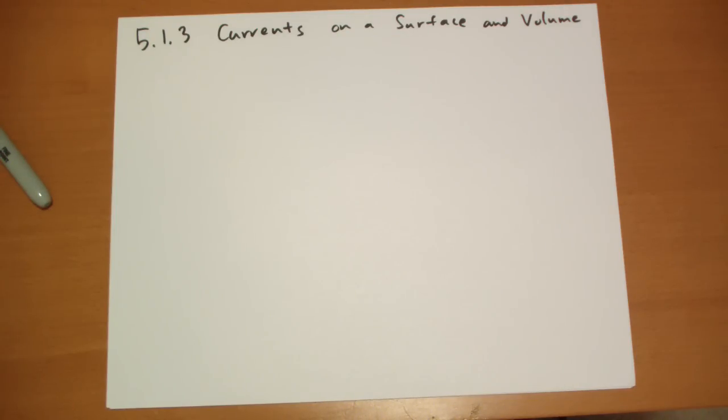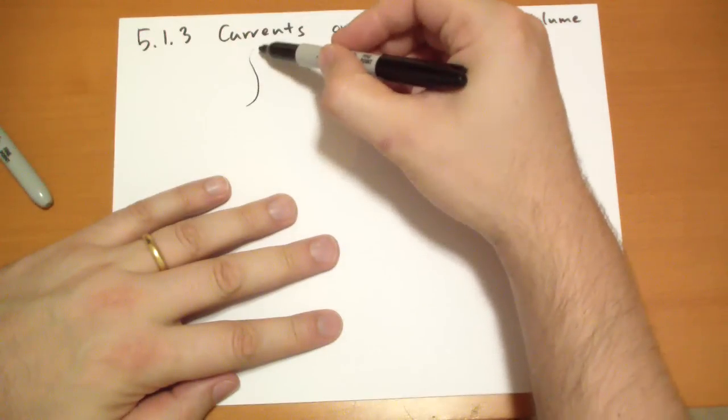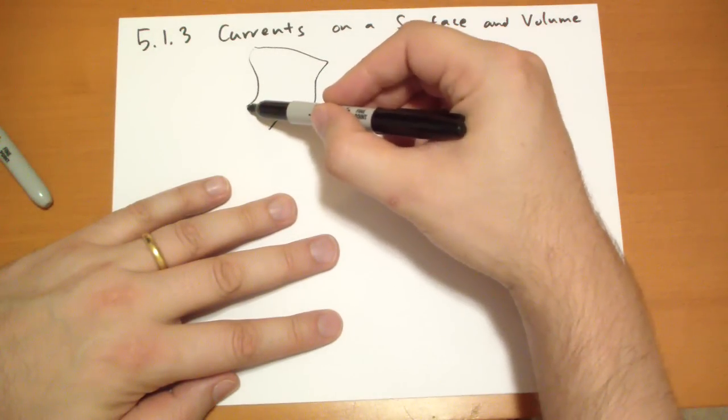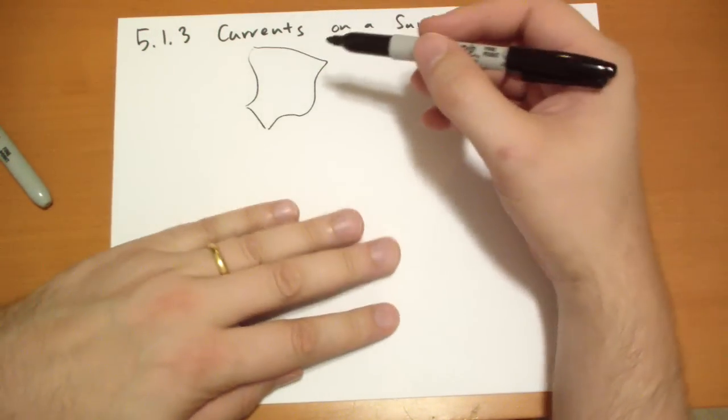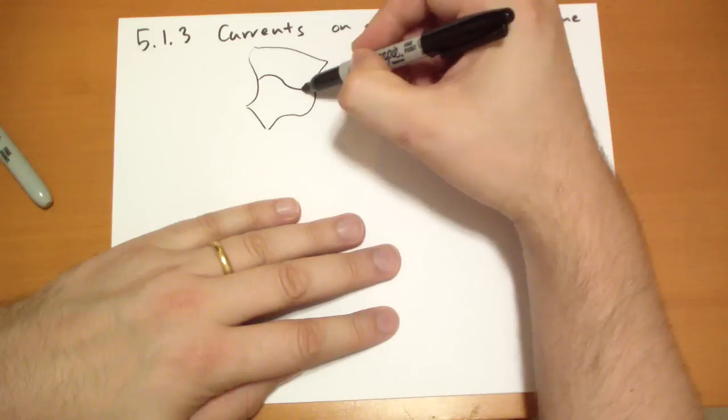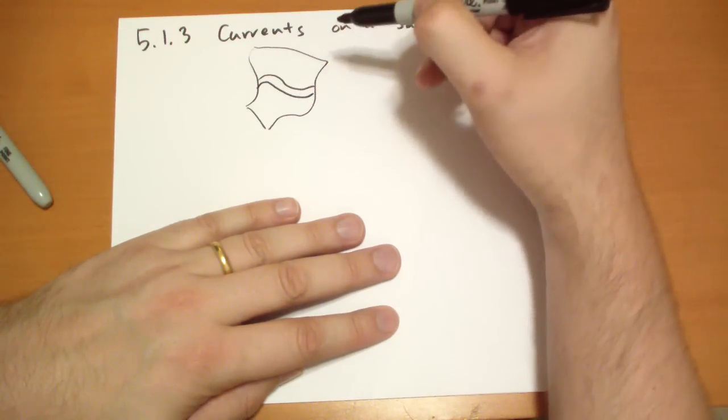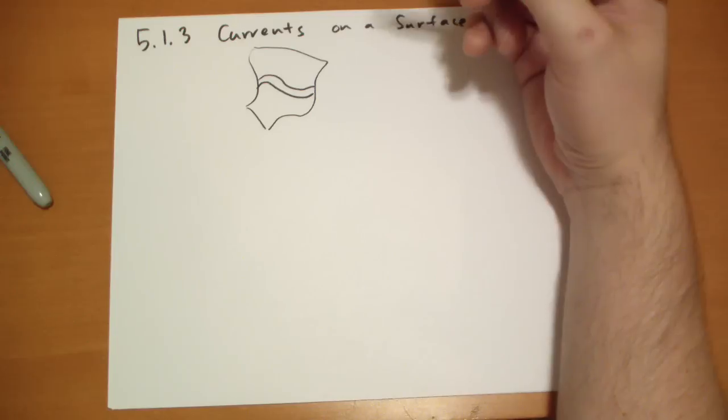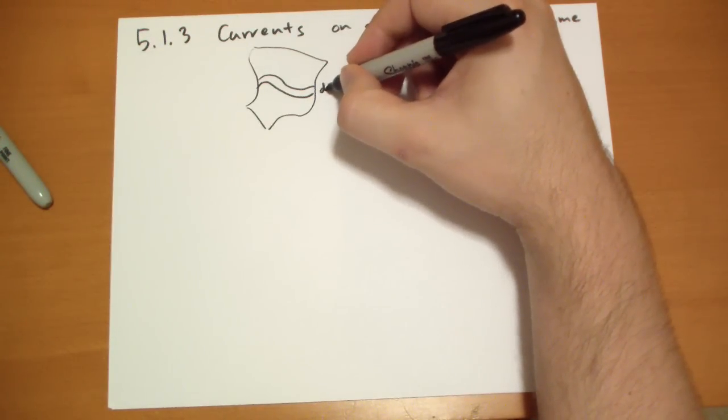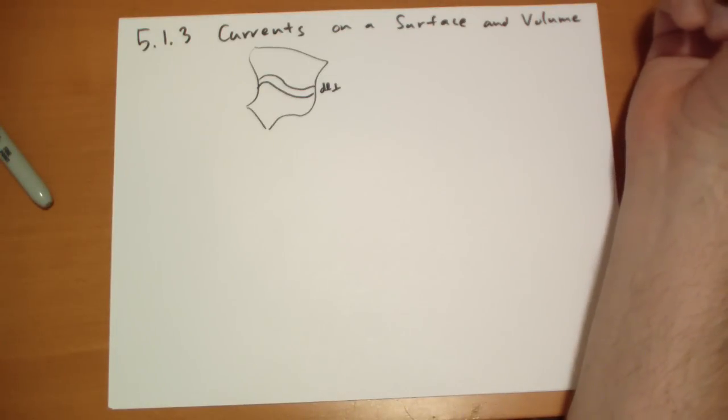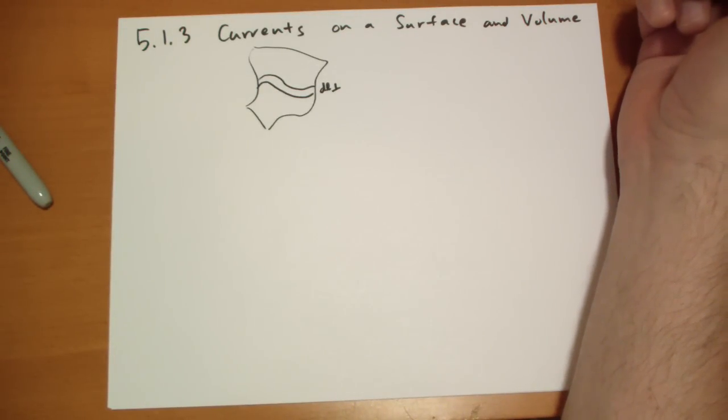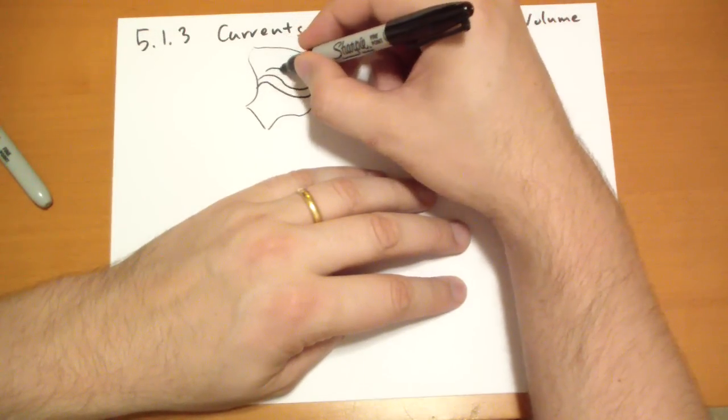So when charge flows over a surface, let's draw a strange, doesn't matter what the shape is. What we can do is we can cut out a ribbon, an arbitrary ribbon, it doesn't really matter. And this ribbon has a width of DL in the perpendicular direction to the current flow. So the current is going to flow along this path.